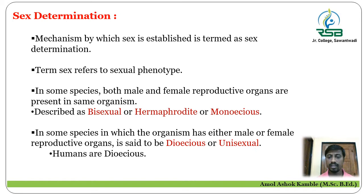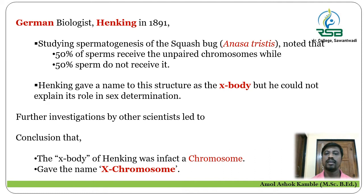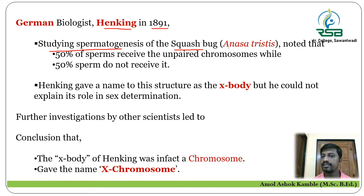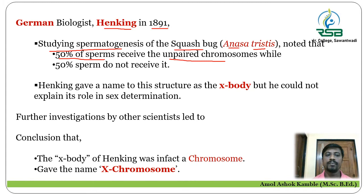The German biologist Henking, in the year 1891, performed an experiment on the mechanism of spermatogenesis in the squash bug, Pyrrhocoris apterus. He noted that 50% of the sperm of this squash bug received an unpaired chromosome, while the other 50% of sperms did not receive this unpaired chromosome.